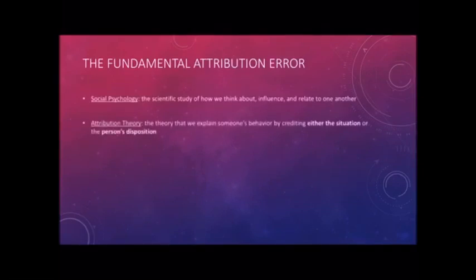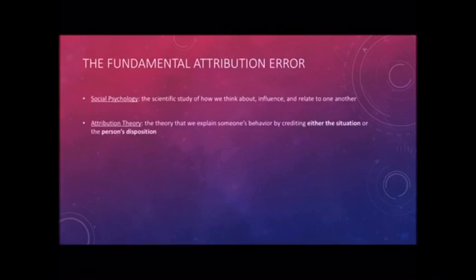The first thing we want to talk about is attribution theory. All you need to know is that it says we explain behavior by crediting that behavior to one of two sources: either the situation or the person's disposition. Next to disposition, you can write the word character — a person's character is what you're talking about when you're talking about disposition.